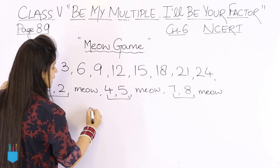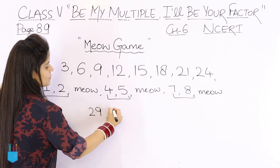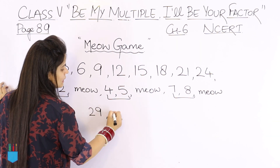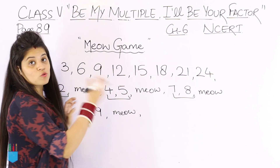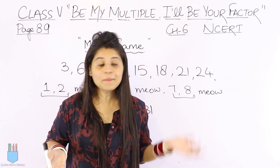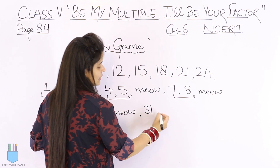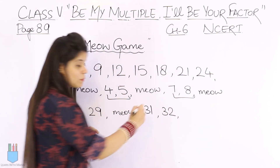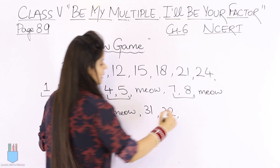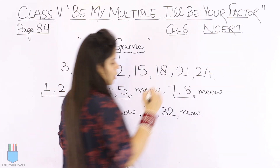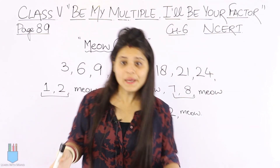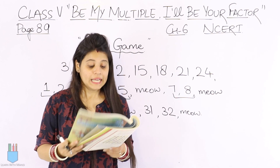Now imagine someone reached 29 and said 29. The one who had to say 30 says Meow instead. Then we say 31. You might think 3 times 10 is 30, so what happens next? One person says 31, then another says 32. After those two numbers, the next number divisible by 3 means after 32 someone will say Meow. This way you play the game.